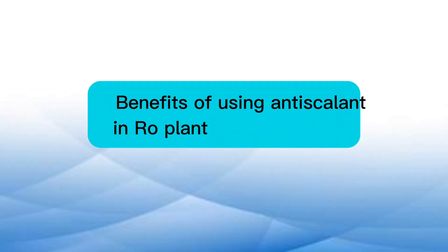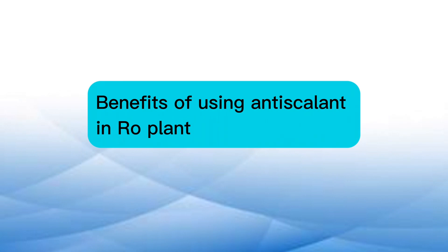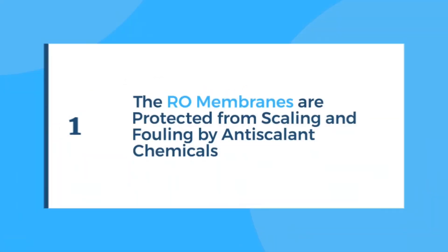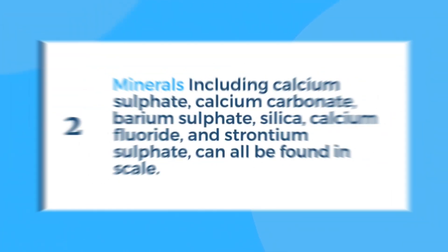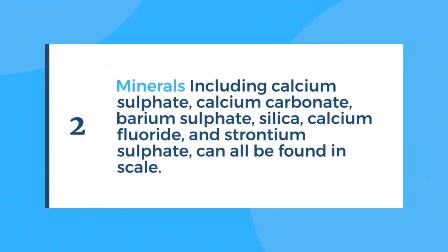Benefits of RO antiscalants. The following are the principal advantages of using antiscalant in your RO plants. 1. The RO membranes are protected from scaling and fouling by antiscalant chemicals. 2. Minerals including calcium sulfate, calcium carbonate, barium sulfate, silica, calcium fluoride, and strontium sulfate can all be found in scale. To remove calcium carbonate, other mineral fouling, and sulfate precipitates, antiscalant should be dosed before the RO membranes.